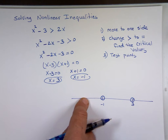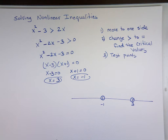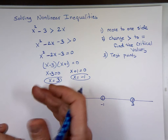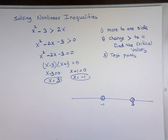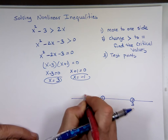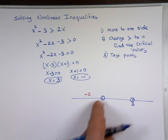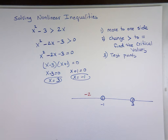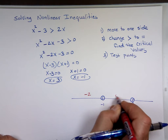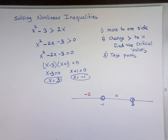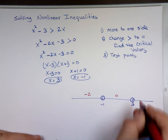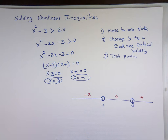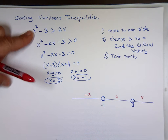Step number three: use test points. Take a point in each segment and test it to see if it satisfies the inequality. Pick a value to the left of -1 — negative 2 is good. Pick a value between -1 and 3 — 0 is good, makes the math easier. And pick a value bigger than 3 — 4 is fine.